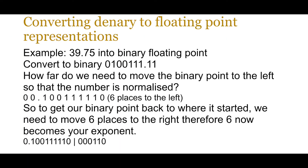Let's summarize everything that we've gone through over the last two lessons. Converting binary to floating-point representations - let's look at the example of 39.75 into binary floating-point. First we convert it to binary. How far do we need to move the binary point to the left so the number is normalized? Remember, to normalize the number the first two significant bits need to be different. In this case we'll need to move six places to the left to get it to the right place. So to get our point back to where it started, we need to move six places to the right, therefore six becomes the exponent.